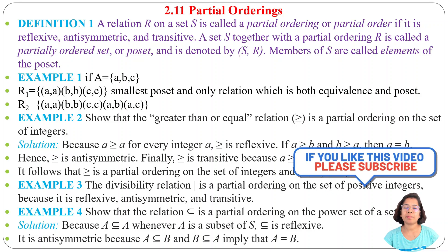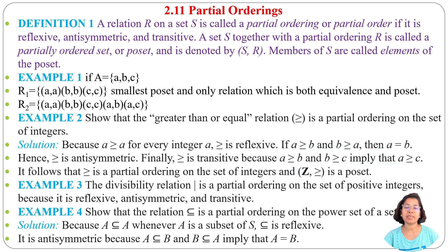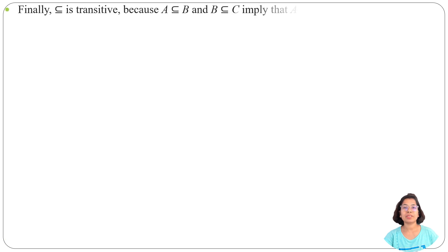In the previous lecture I already discussed partial order. A relation is called a partial order or poset if it is reflexive, anti-symmetric, and transitive. If A is related to A it is reflexive. If A related to B and B related to A then A equals B — that is anti-symmetric. And if A related to B and B related to C then A must be related to C — that is transitive.